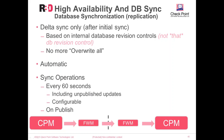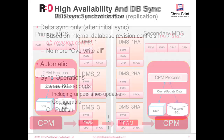The sync is done automatically and happens every 60 seconds. It includes unpublished updates, and the interval is configurable. It also happens when someone presses publish — an explicit sync then occurs between management servers. The sync process involves the CPM process sending delta changes to FWM, which communicates over SIC to the secondary MDS server, sending the delta changes to CPM on the secondary, which then stores them in the PostgreSQL database.